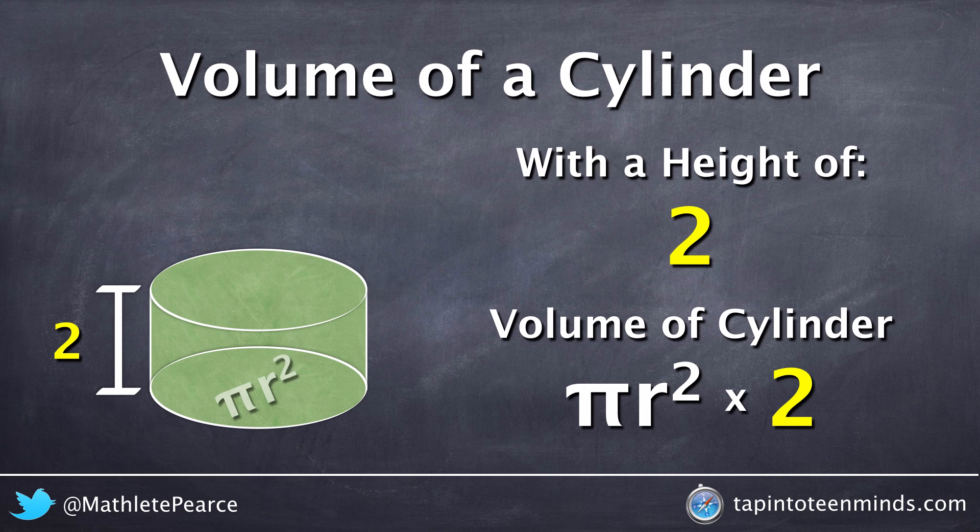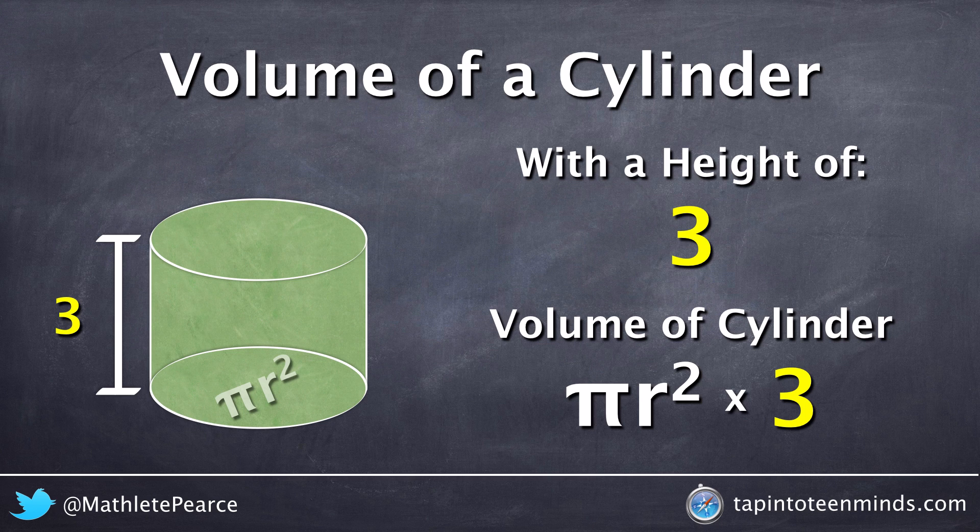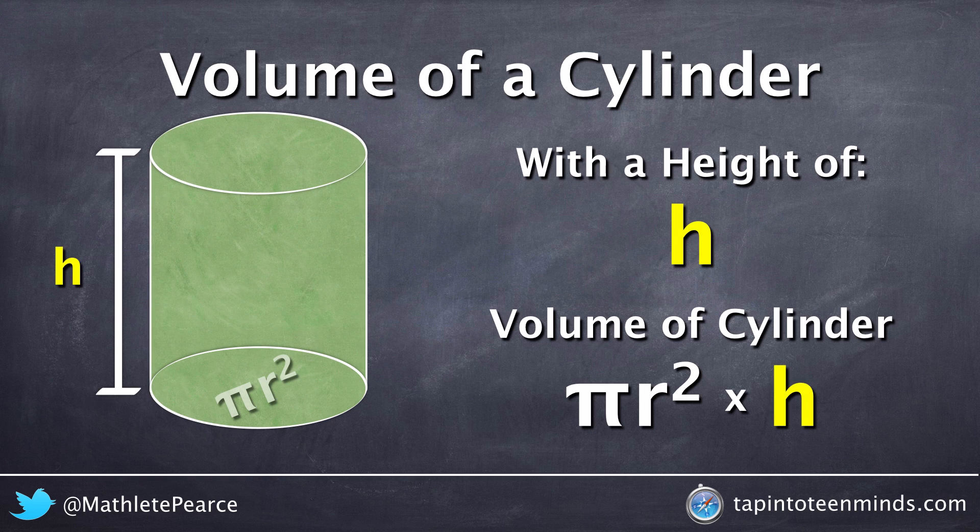I can increase the height, and I now have pi r squared times 2, pi r squared times 3. And finally, we can sub in any height we'd like by simply using a variable of h.